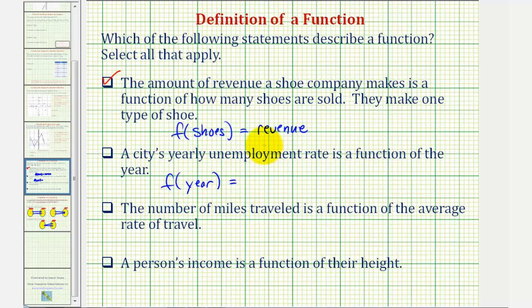equals the unemployment rate. For example, if we select one year, there's only one yearly unemployment rate, so this represents a function.